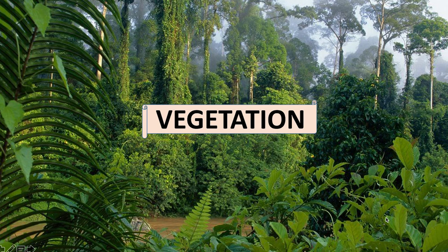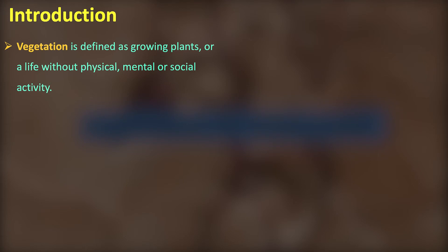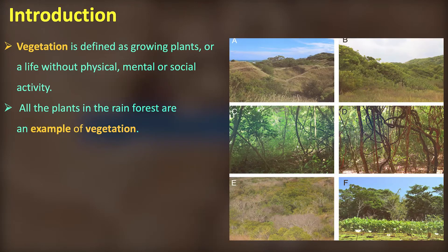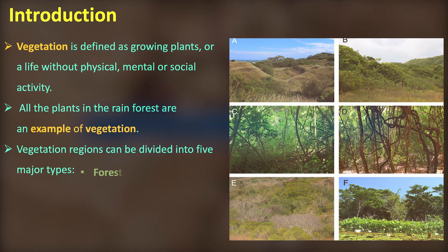What is vegetation? Vegetation is a general term for plants collectively. Vegetation has different types. Major types include Tropical Forest, Grassland, and Tundra.